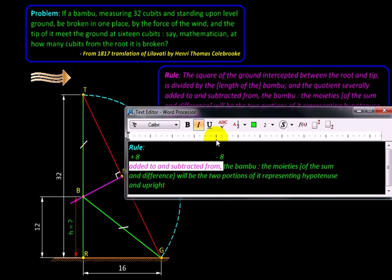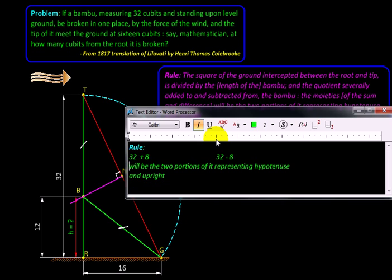So we will be taking this quotient twice. It is to be added to some quantity and then again it is to be subtracted from some quantity. So added to and subtracted from the bamboo: 32 and 32. So it is added to and subtracted from the length of the bamboo. The moieties of the sum and difference. So we are going to take half of this sum and half of this difference.